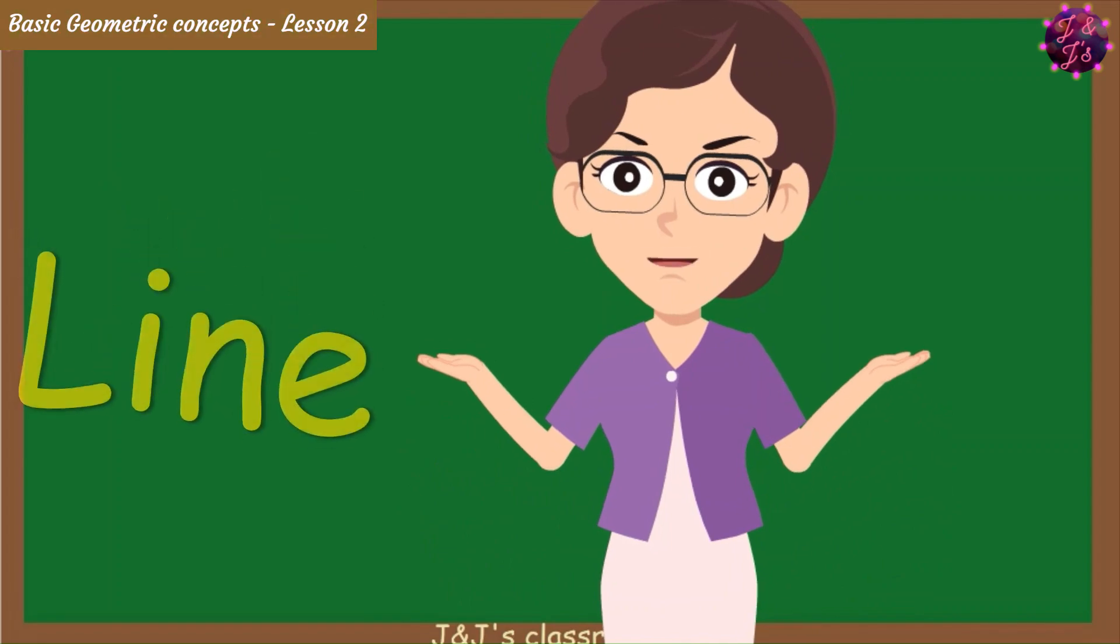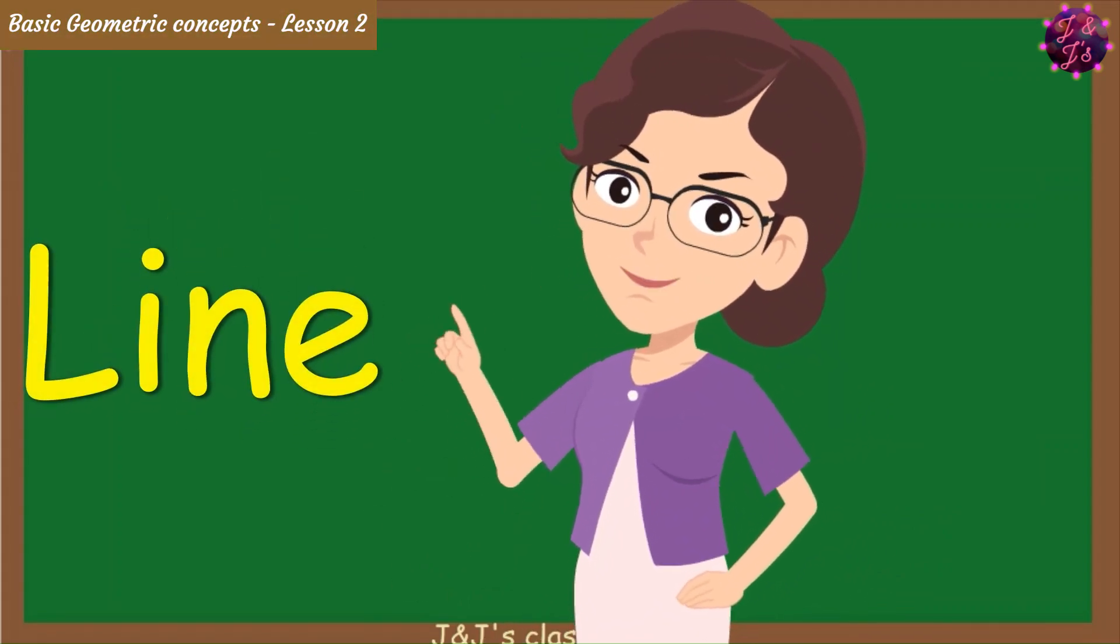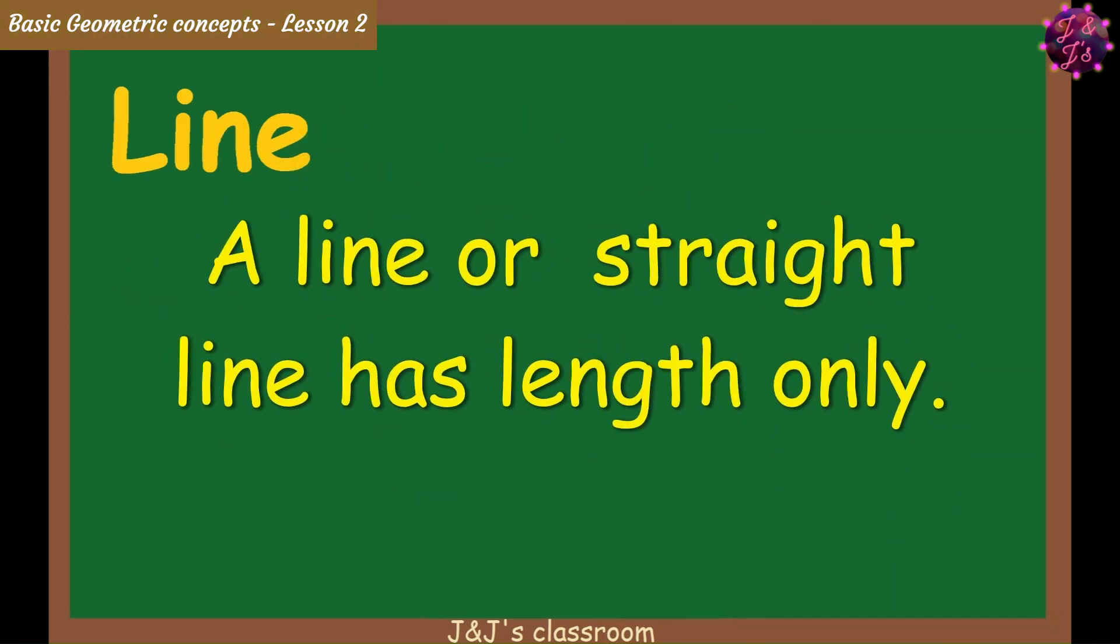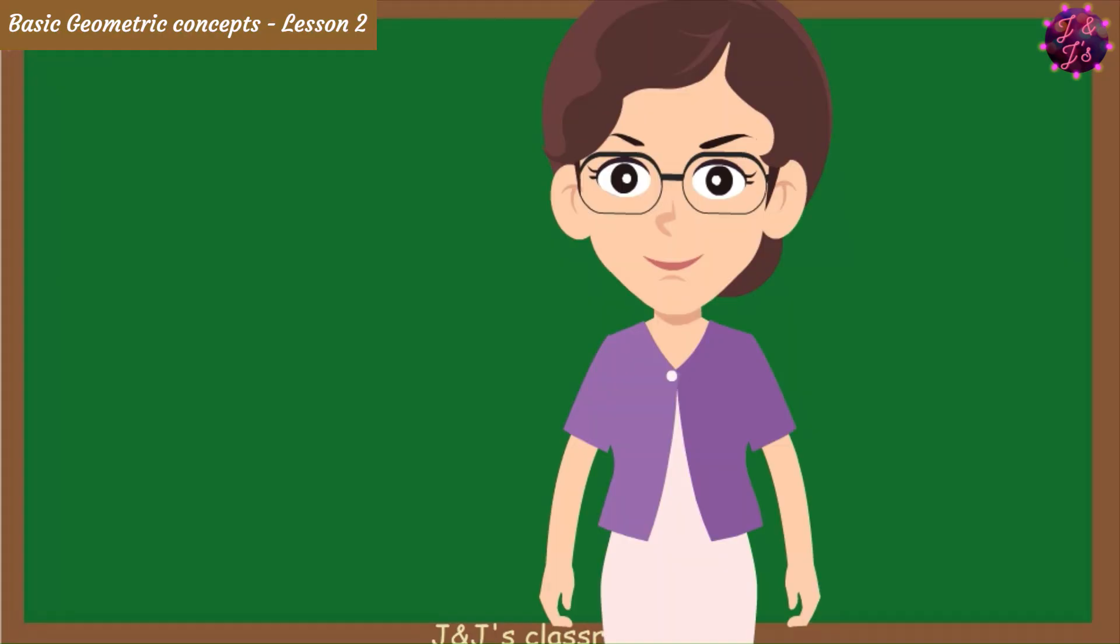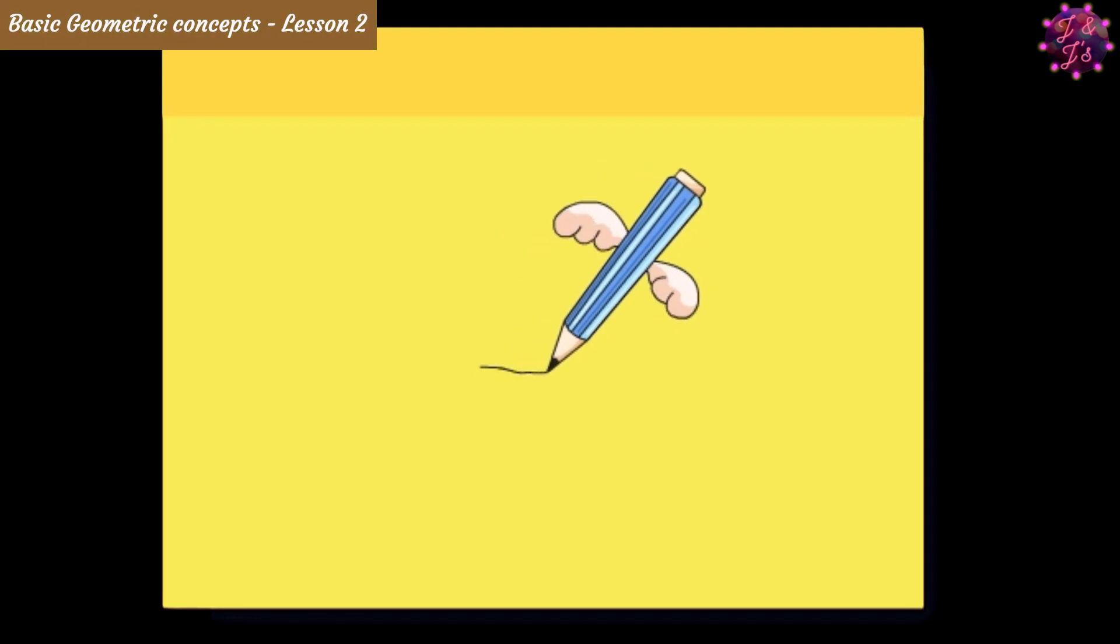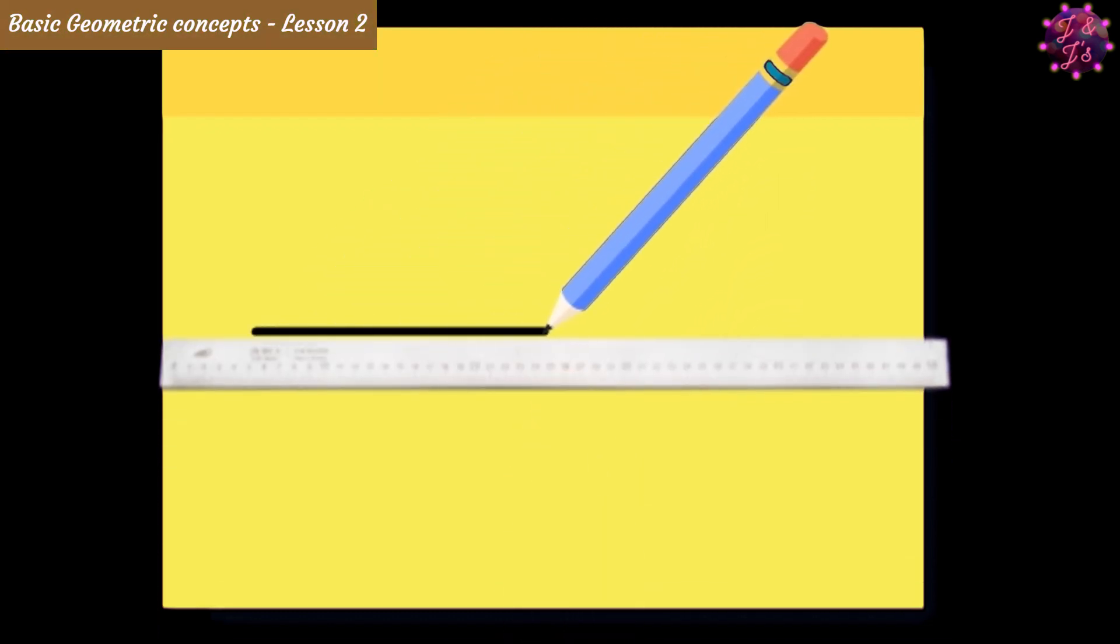What's next? Yes, Line. A line or straight line has length only. Now please take a paper, pencil, and ruler. Then, use the ruler to draw a straight line with arrowheads like how I am doing.